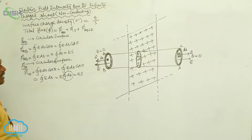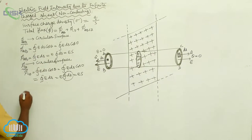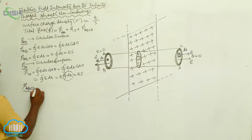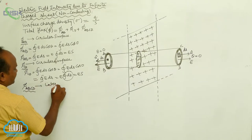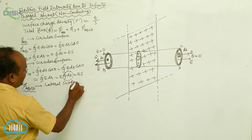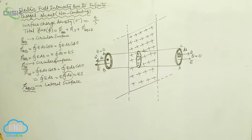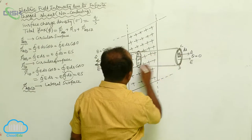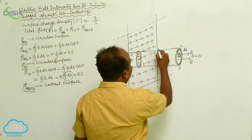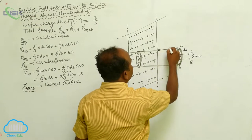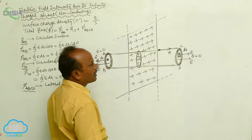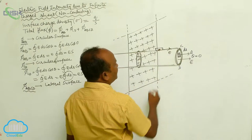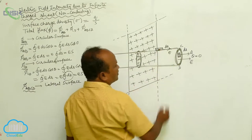What is the flux passing through the lateral surface ABCD? Now ABCD is the lateral surface. On the lateral surface, let us consider a unit area. That small amount of area is equal to dS.